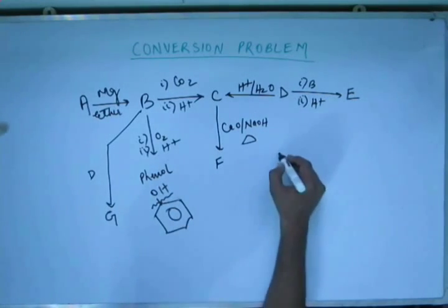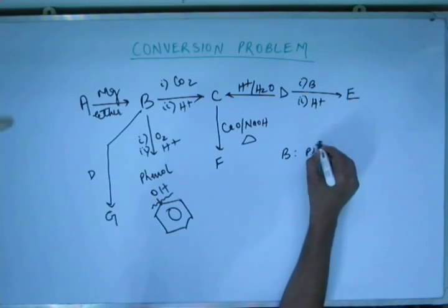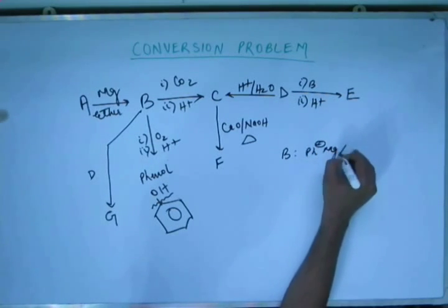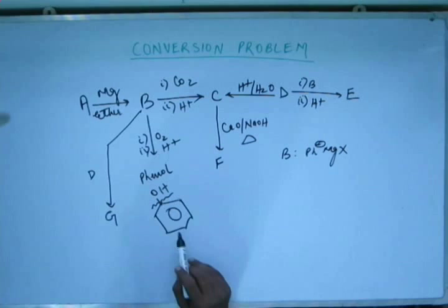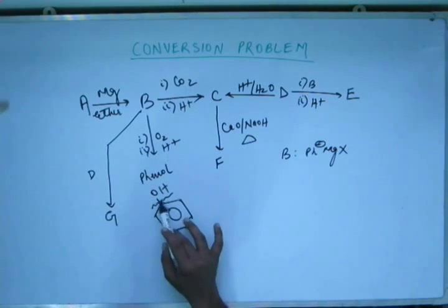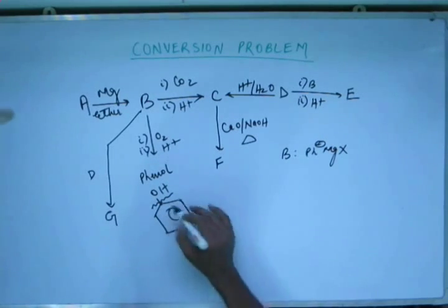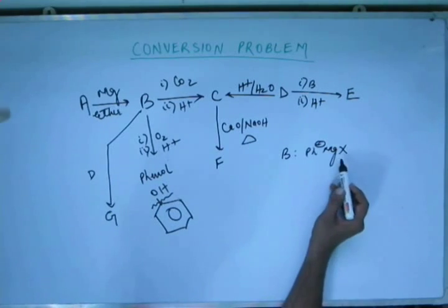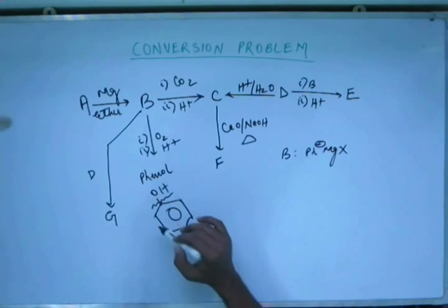So in B you will have the rest of the part except OH. So this rest of the part will serve the purpose of R minus in the Grignard reagent. So B, the Grignard reagent of B must be Ph minus MgX. I am not showing charge on magnesium and X because they are stable. So this negative charge has to be at this end where OH group is added because that is the end where the reaction occurs. And that will be called as Ph minus. That will be a phenyl group.